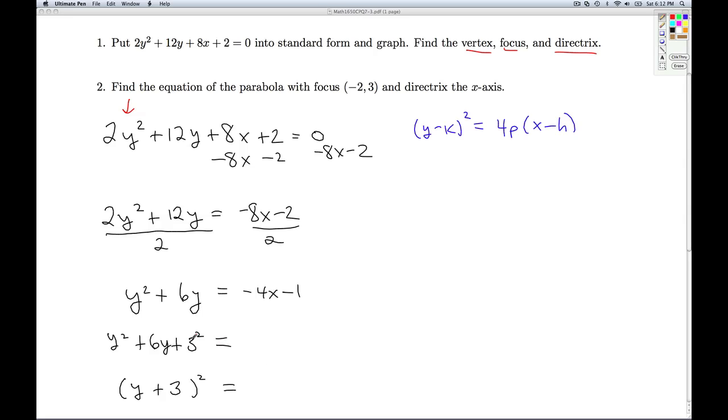And so to keep the balance, if I added 3² to one side of the equation, I better add 3² to the other side. And this gives me -4x + 8. Looking back at my form, I've got the completed square on the left with the y. Now what I need to do is factor out the coefficient of x on the right, and so I get (y + 3)² = -4(x - 2).